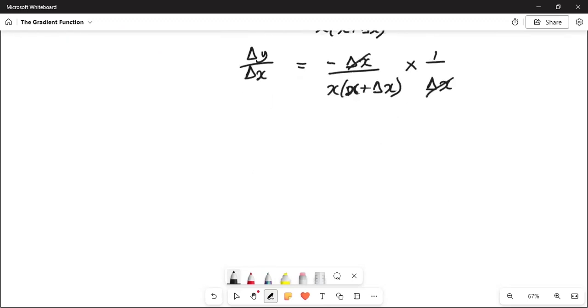Therefore, delta y over delta x is equal to negative 1 over x. Let me just open up this bracket. x times x is x squared plus x delta x.